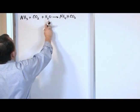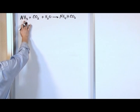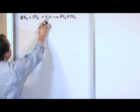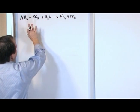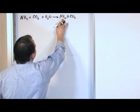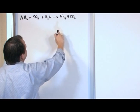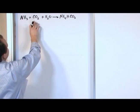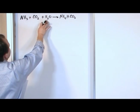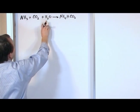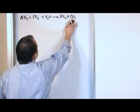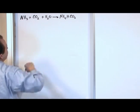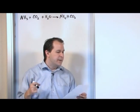One nitrogen on each side. Three hydrogens plus two more gives us five; four plus one gives us five hydrogens. One carbon on each side. Two oxygens plus one gives us three oxygens, three oxygens on the other side. The whole thing is balanced.